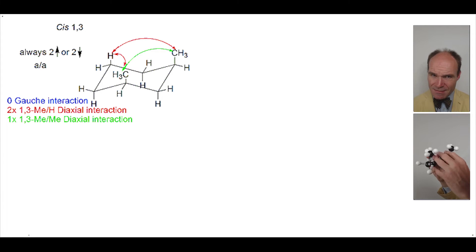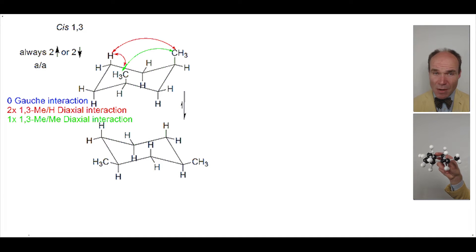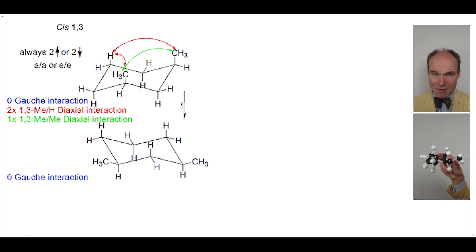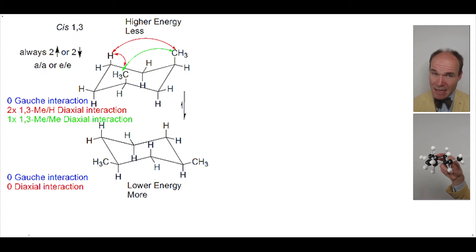Let's take the chair and ring flip it. This alternate chair conformation has the methyl groups both in equatorial positions. When we look for steric strain, there are no gauche interactions and no 1,3-diaxial interactions. This alternate chair has a lower energy and is also more abundant than the first chair.